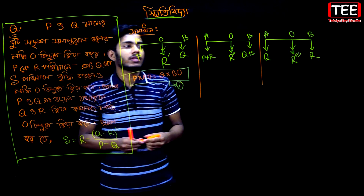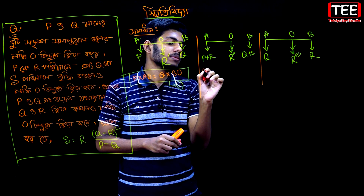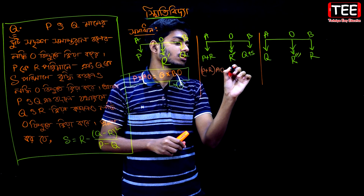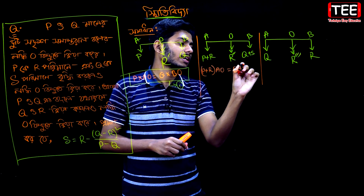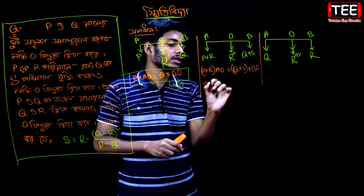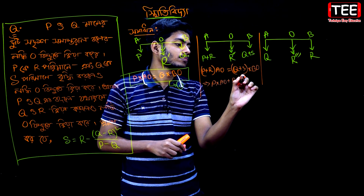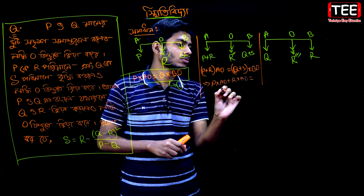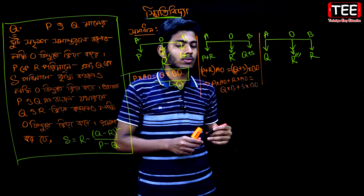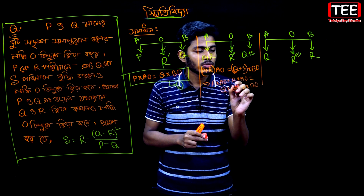P plus r into a is equal to q plus s into b. How does this work? P into a plus r into a is equal to q into b. So I think here p into a is equal to q into b. A mistake: a is equal to u.